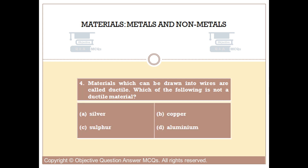Question number four. Materials which can be drawn into wires are called ductile. Which of the following is not a ductile material? Option A: Silver. Option B: Copper. Option C: Sulfur. Option D: Aluminium.